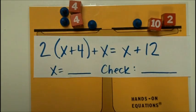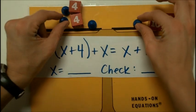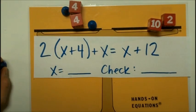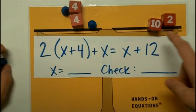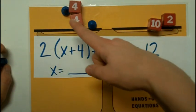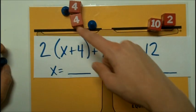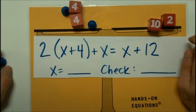So now I'm going to use my legal moves to remove a pawn from both sides. Now I can't take away any more pawns because I don't have any on this side. But I do have 8. 4 plus 4 is 8. So I can take away 8 from both sides.